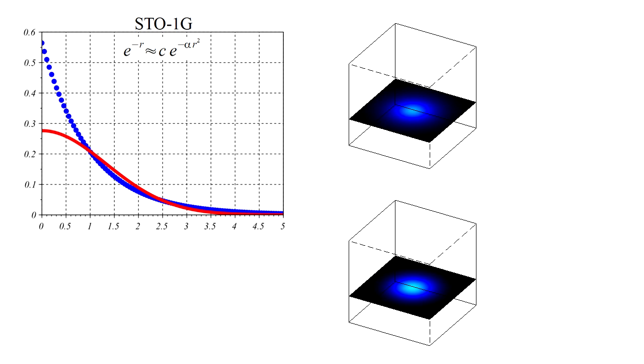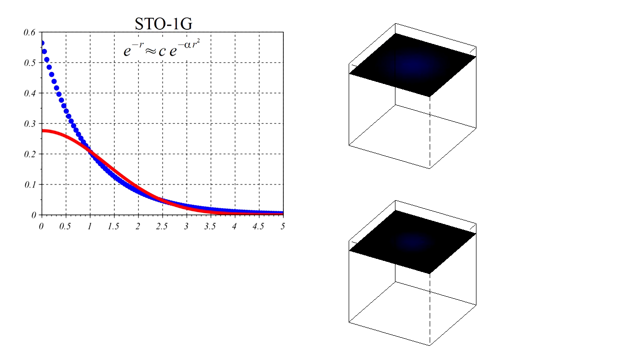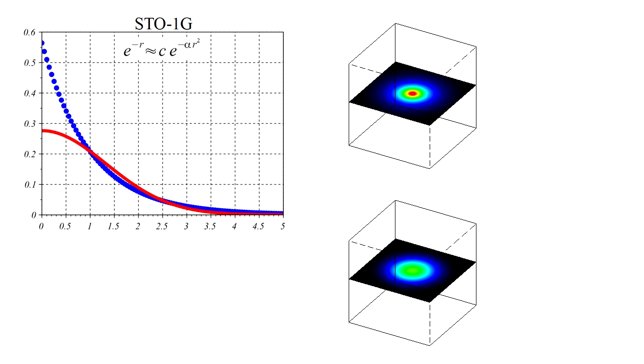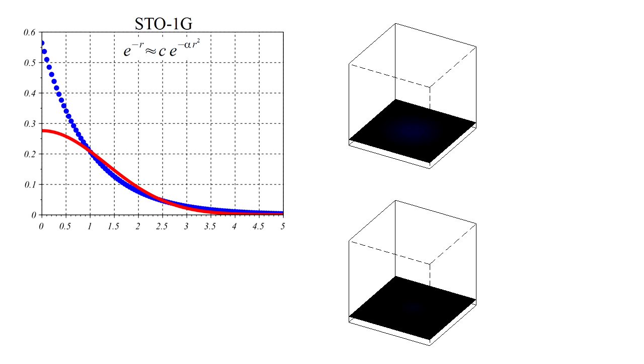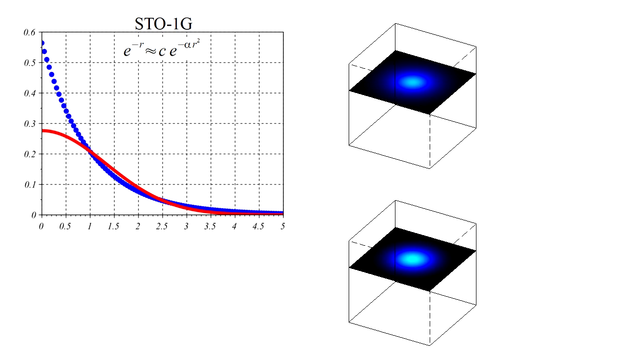These 3D scans illustrate the Slater-type orbital on top, and the Gaussian-type orbital on the bottom. The Slater-type orbital has a much more peaked density near the nucleus, while the Gaussian-type orbital is more diffuse.